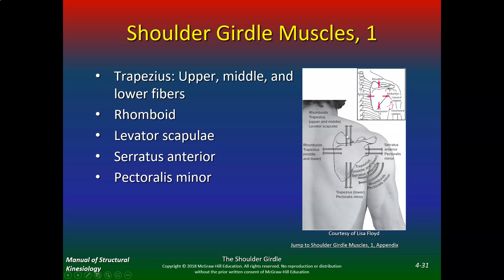Looking at the scapula movements: elevation is performed by the rhomboids, upper and middle traps, and levator scapulae. Retraction is performed by the rhomboids and middle and lower trap. Protraction forward is the serratus anterior and pec minor. Lower trap and pectoralis minor will also bring it down. Trapezius middle and lower cause upward rotation, while rhomboids and pec minor cause downward rotation. Reference points: elevation, adduction, abduction, depression, upward rotation, downward rotation.